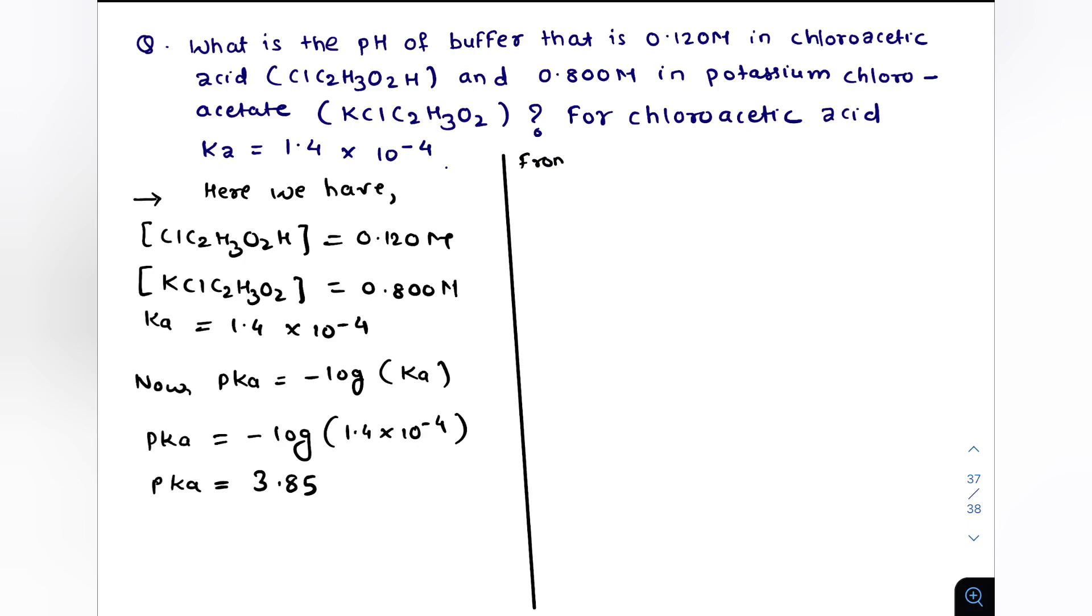Now we have to calculate the pH. For this we will use Henderson-Hasselbalch equation for determining the pH of buffer. This equation gives you a formula to determine the pH of the buffer from its concentration of weak acid and its salt or conjugate ion, which is pH = pKa + log[salt]/[acid].